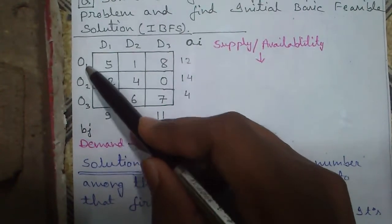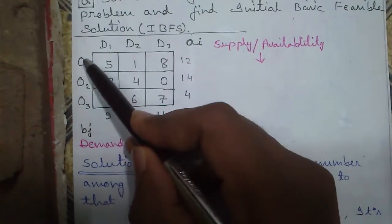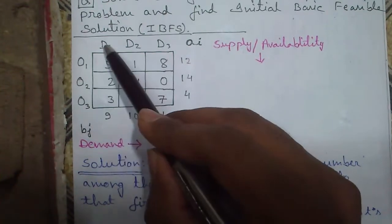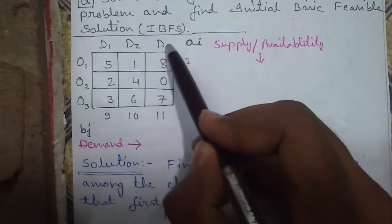Again we have 3 origins O1, O2 or O3. You can say them 3 depots or 3 go downs and 3 customers or 3 destinations D1, D2, D3.